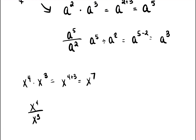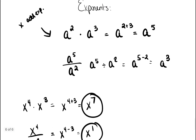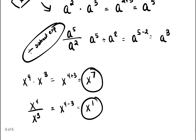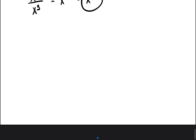Now if we were dividing the same two numbers — x to the fourth divided by x to the third — instead of adding, we subtract: x to the four minus three, which is x to the first power. So when you multiply you add the exponents, and when you divide you subtract the exponents.